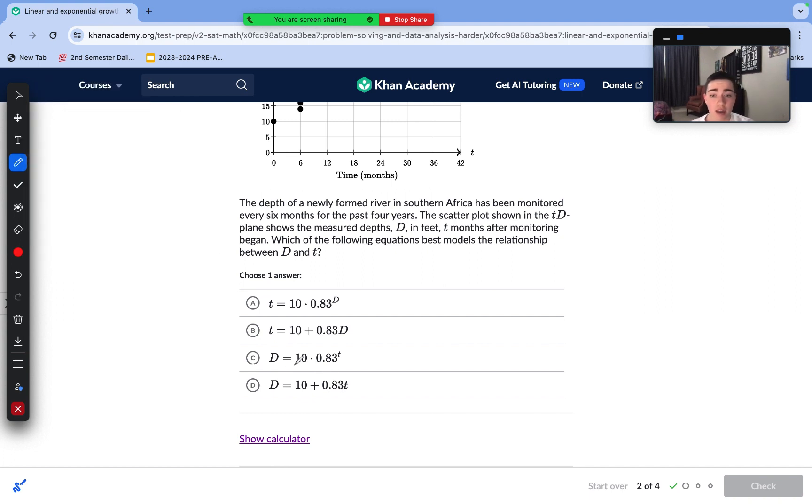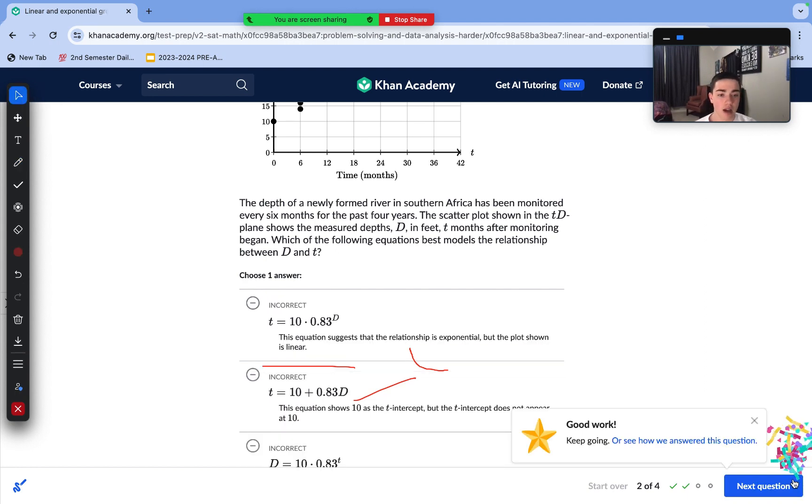If you guys may notice, this function will actually decline as time increases, because 0.83 is less than 1. This exponential function declines over time. That does not look like our trend at all, which is a straight line in which T increases. In the case D also increases. D is our correct answer here.